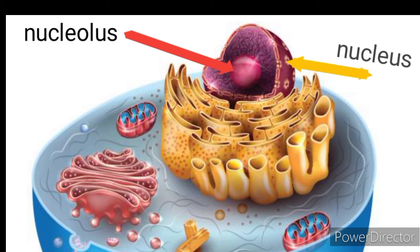Assembly: Ribosomes are assembled in the nucleolus, a distinct region within the cell's nucleus. The assembly involves the synthesis of rRNA, which combines with ribosomal proteins to form the small and large subunits.